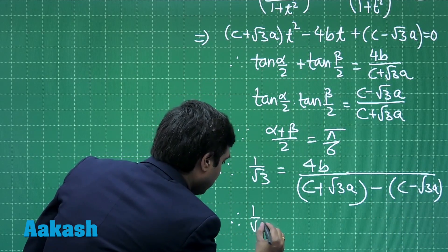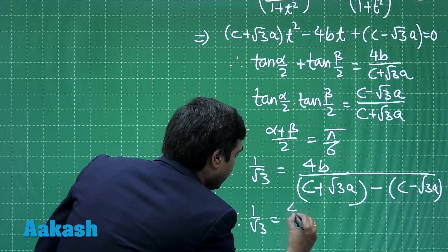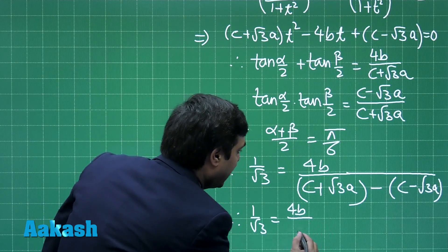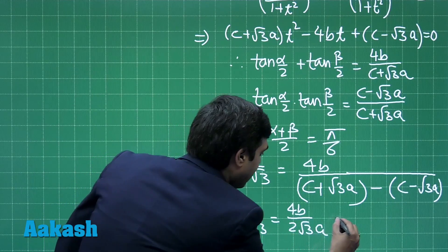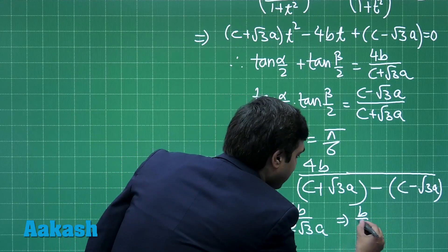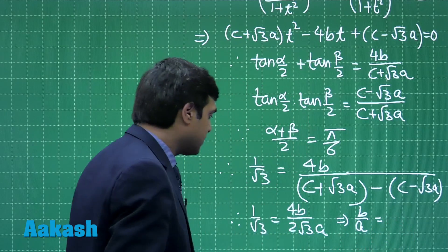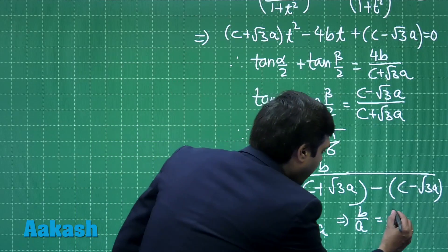That is, 1/√3 = 4B/(2√3·A), or the ratio required, which is B/A, comes as 1/2.